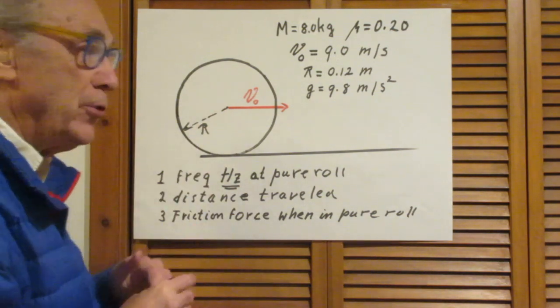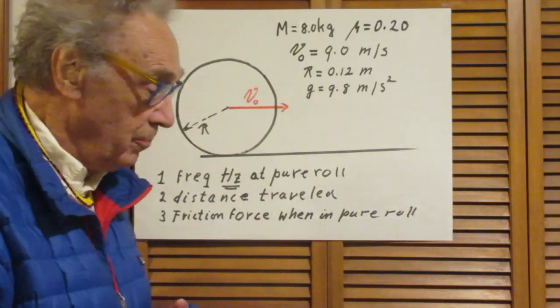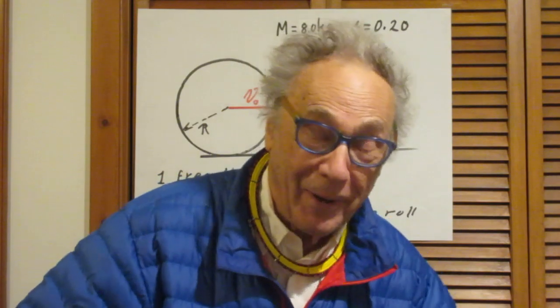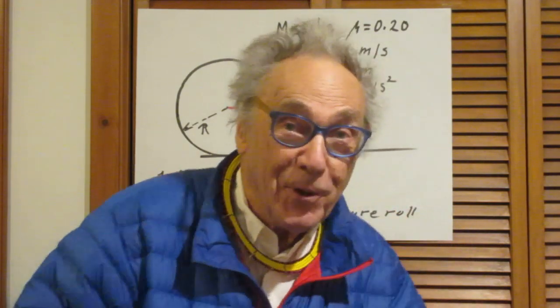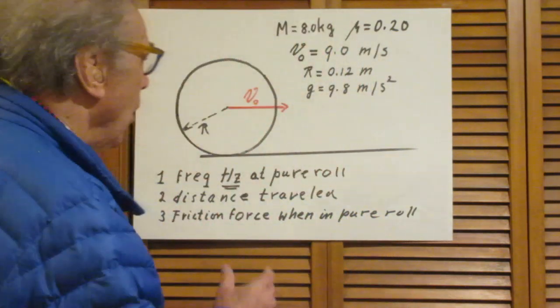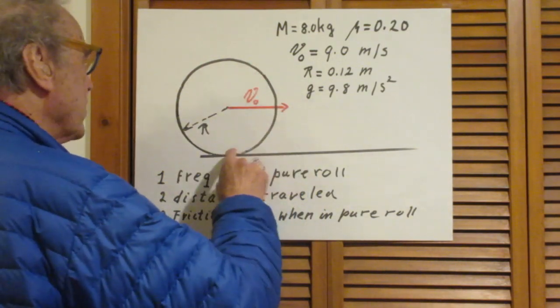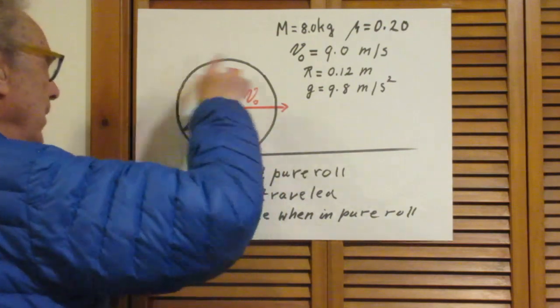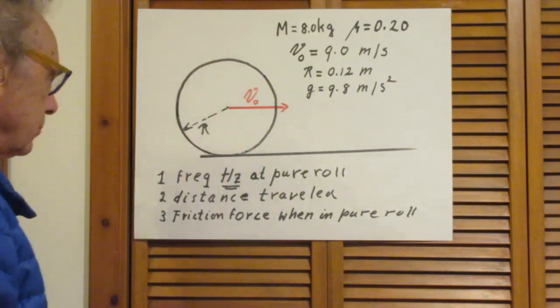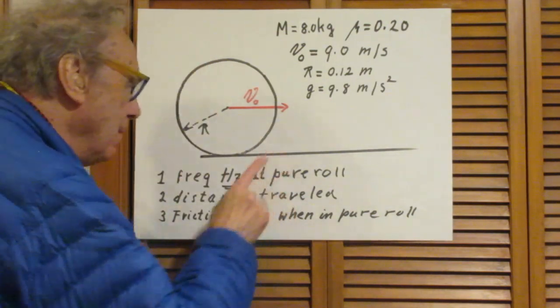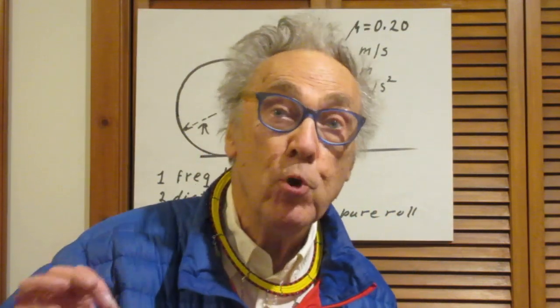What is going to happen — all of you can probably easily imagine that. You can do an experiment like this at home with any ball that you may have. So in the beginning it slides, but then because of the frictional force, it is going to spin up in this direction. And there comes a time that the object is in pure roll.